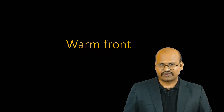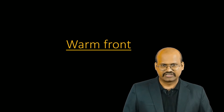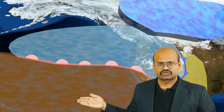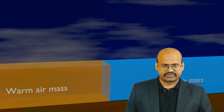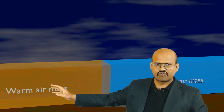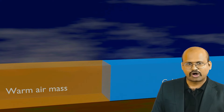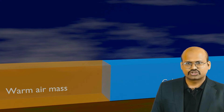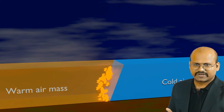Now let's see the details of warm front. In a warm front, a warm air mass moves towards cold air mass, replacing the cold air. It is indicated by lines having semi-circles where the circles indicate the direction of movement. Here in this diagram we see the cold air mass and the warm air mass. Cold air is more dense and therefore heavier, while warm air is less dense and therefore lighter.